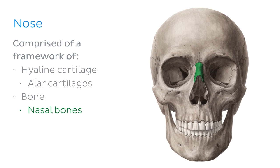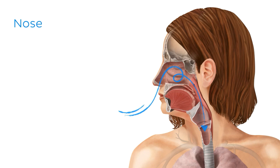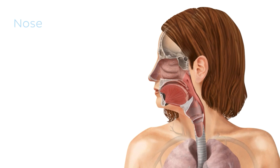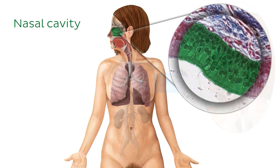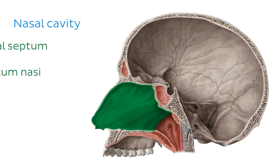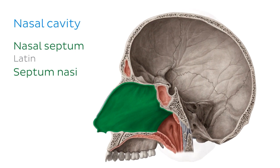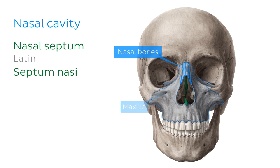Once air is breathed in through the nose, it enters the nasal cavity. The nasal cavity is a space behind the nasal vestibule that is lined with respiratory epithelium and is divided into two equal chambers by the nasal septum. The piriform aperture is the anterior opening of the nasal cavity, and it is bounded by the nasal bones and the maxilla.